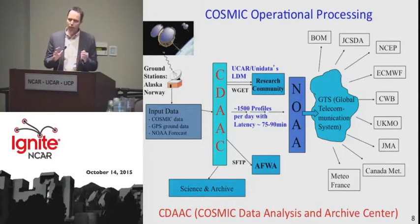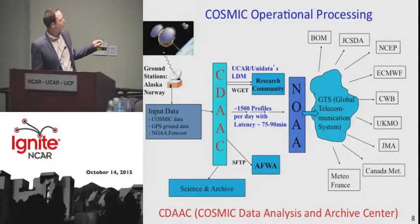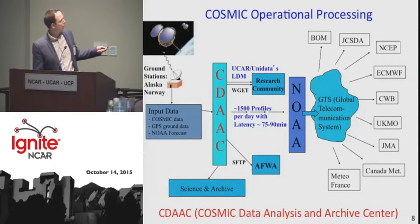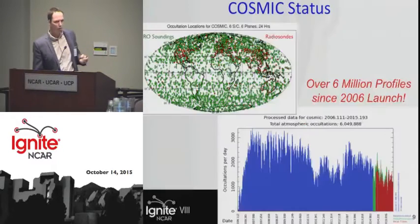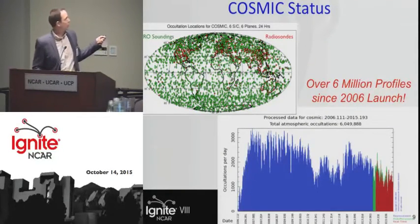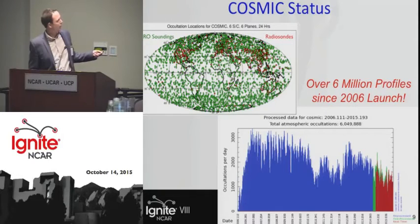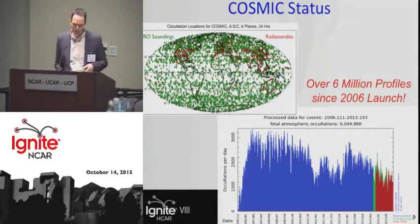This shows the data flow of the COSMIC system. We have data flowing from the LEOs down through the UCAR COSMIC Data Analysis and Archive Center. From here, it flows to NOAA, out on the global telecommunications system to all the global weather centers around the world. We see some global coverage of COSMIC in 24 hours, and a plot of occultations per day since the start of the mission — we've collected over 6 million profiles to date.